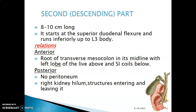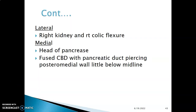Posterior to this descending part of the duodenum, there is no peritoneum, and you will find the right kidney — the hilum of the right kidney — with structures entering or leaving it, including the ureter and blood vessels. Lateral to the descending part, you find the right kidney and the right colic flexure. Medial to it, you find the head of the pancreas, and the common bile duct joins the pancreatic ducts as they pierce the posterior medial wall of the second part of the duodenum at the ampulla of Vater.